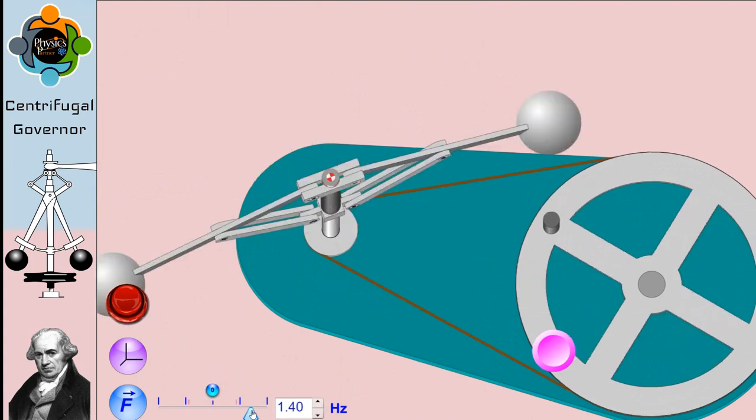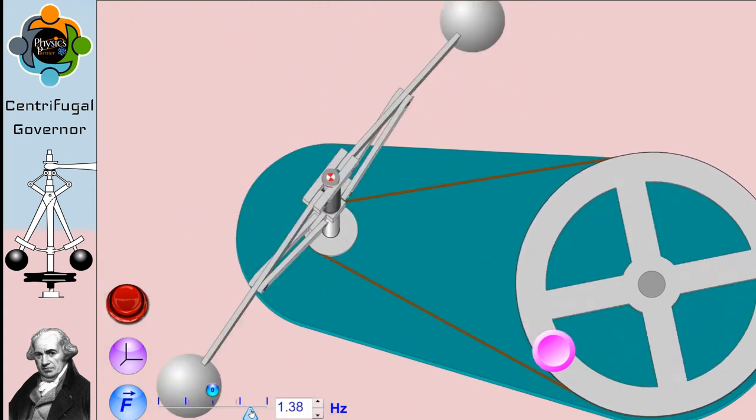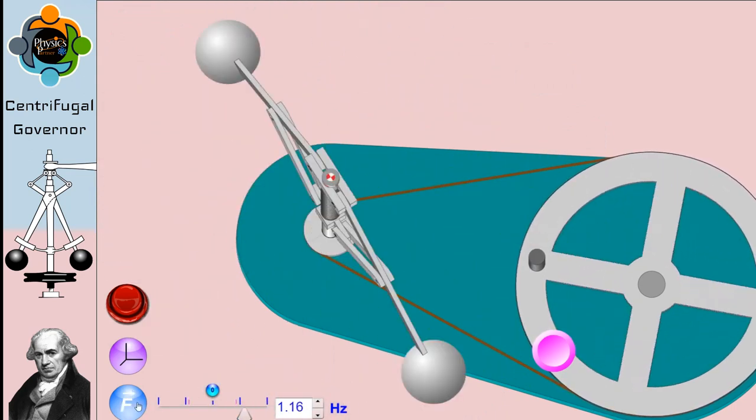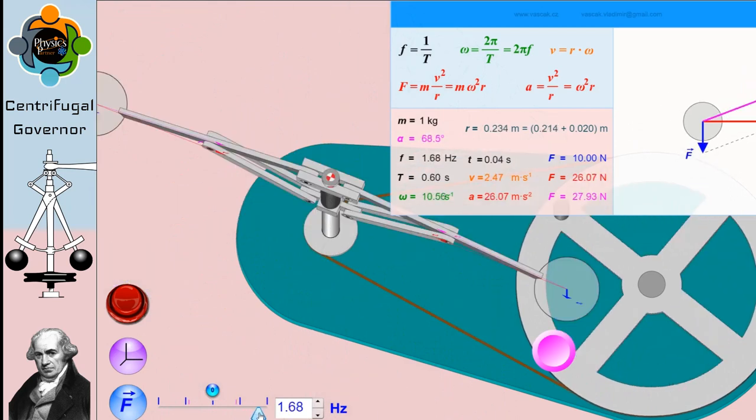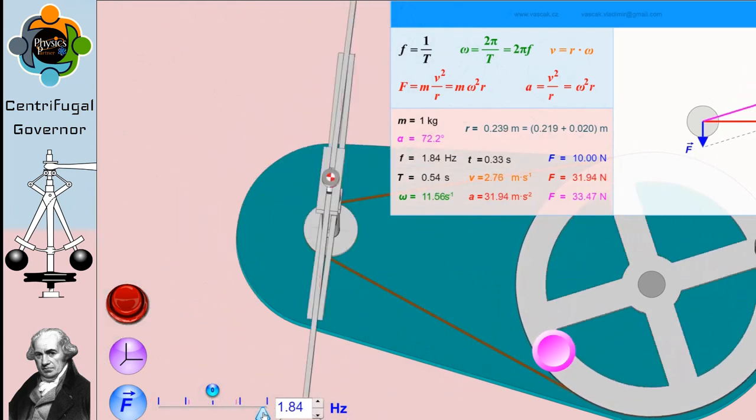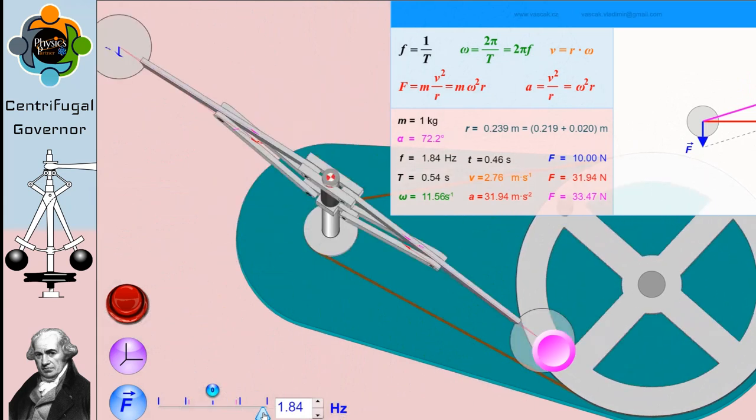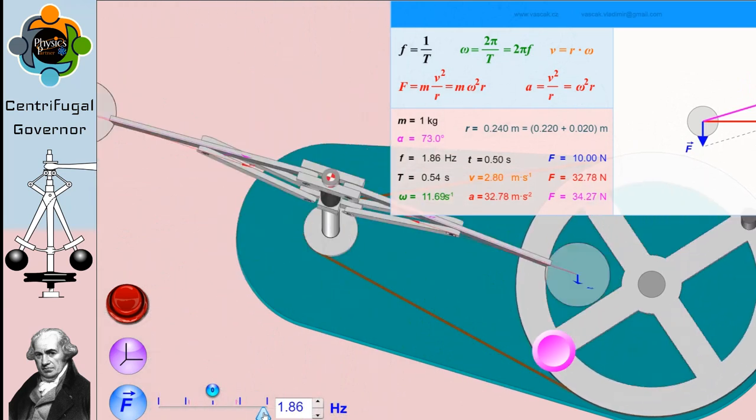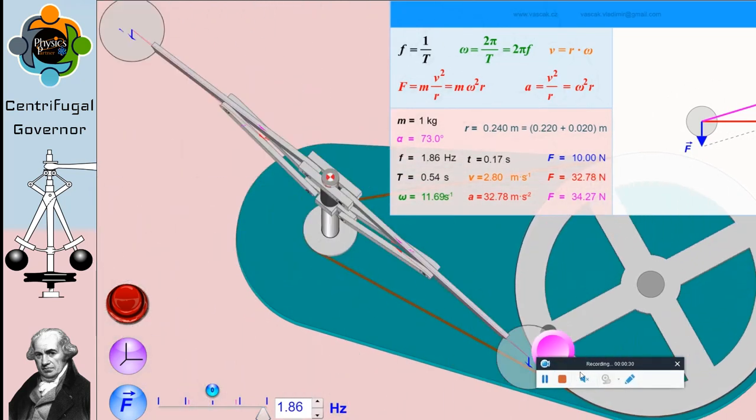This increased velocity in turn causes the throttle to close, decreasing the engine speed until the angular velocity of the governor stabilizes. So I can say that omega may not be directly associated with the centrifugal governor itself, but definitely it is a key factor in the governor's operation as it helps to regulate the engine speed.